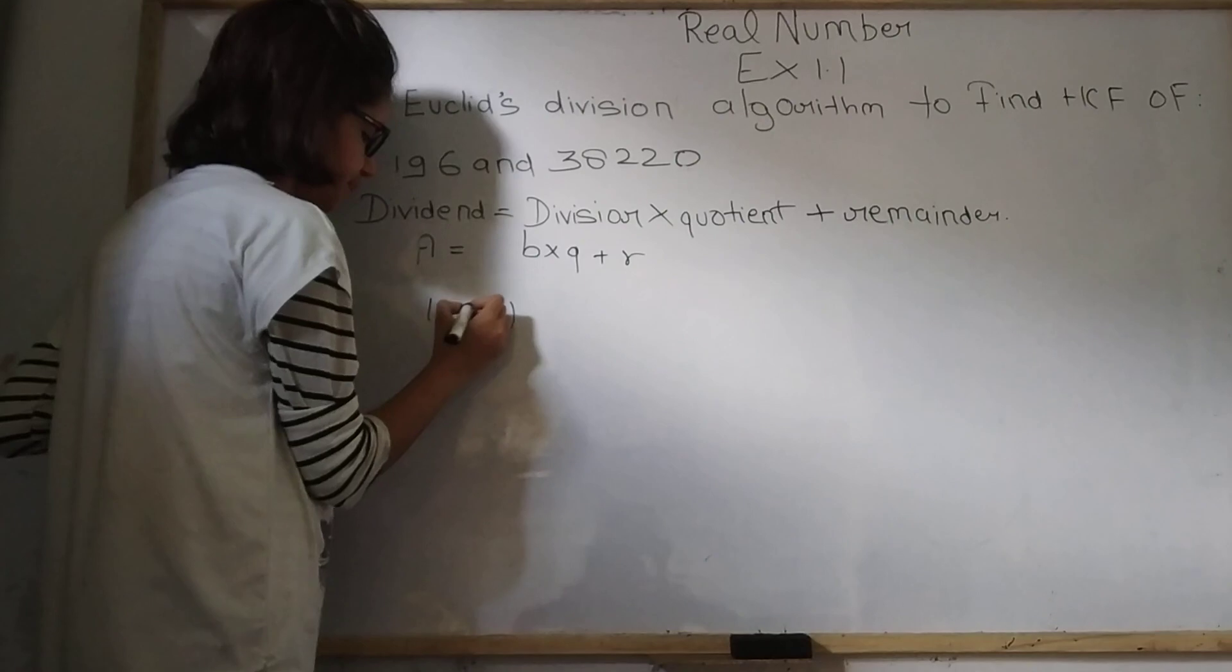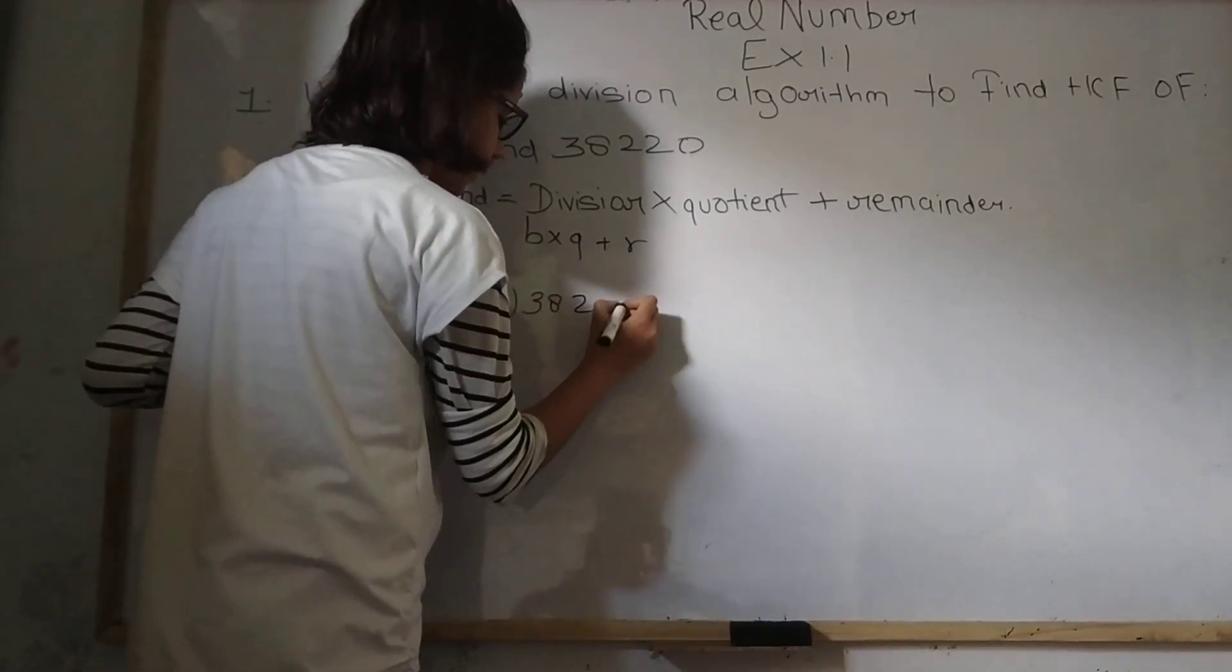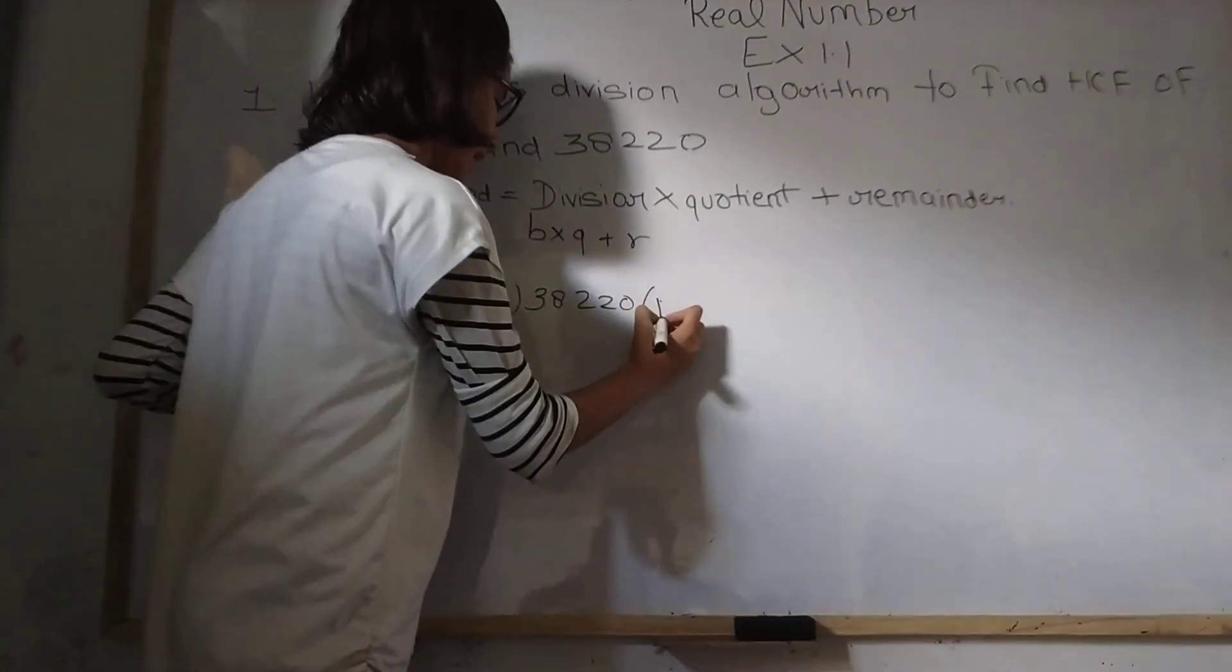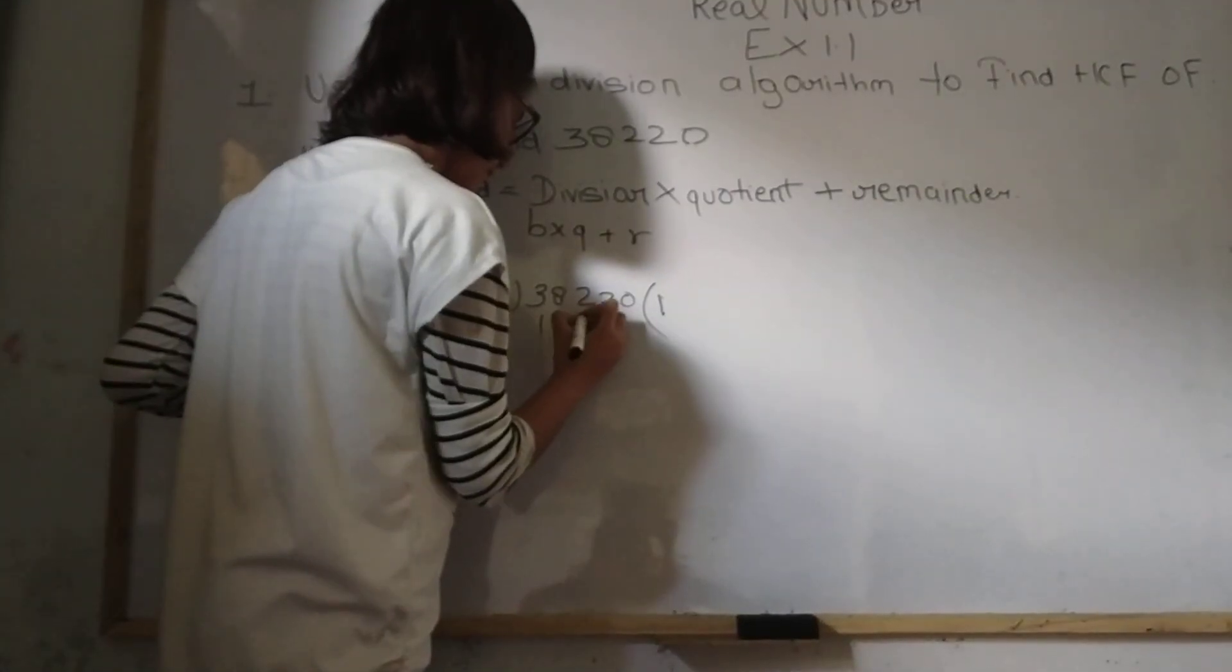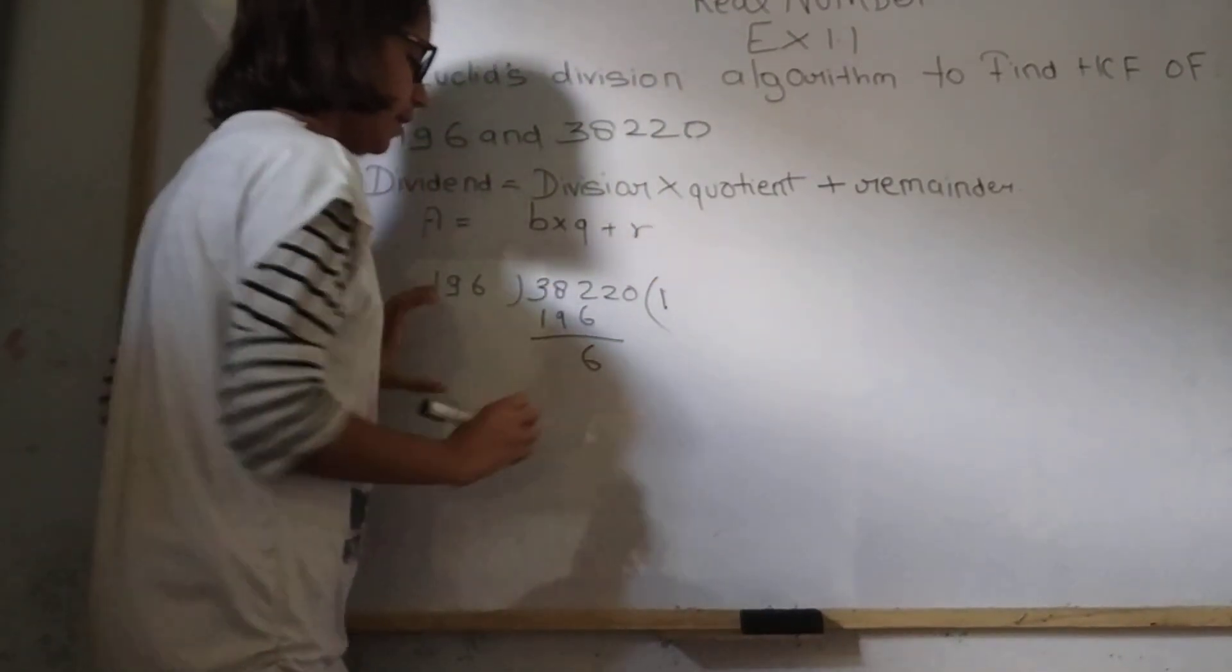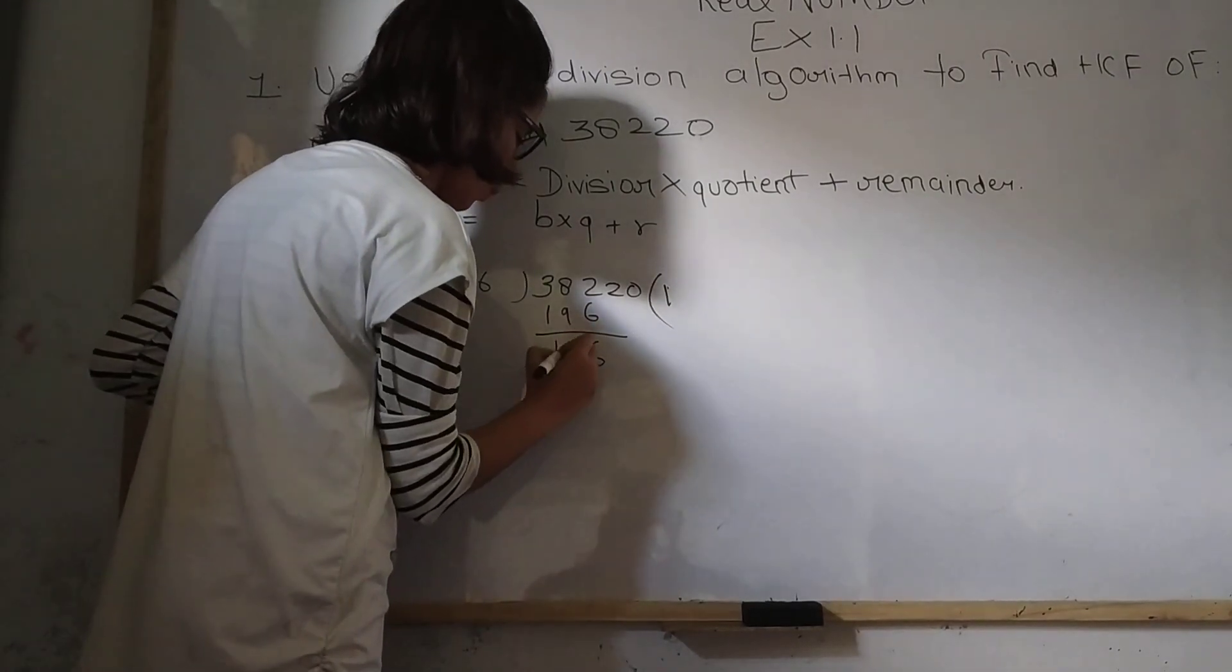So here 196 by 38,220. So now we'll divide it. So 196 one time. And this 12 minus 6, 6, 7, 17 minus 9, 8 and 2 minus 1, 1.